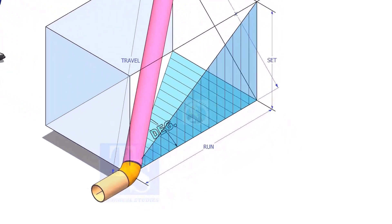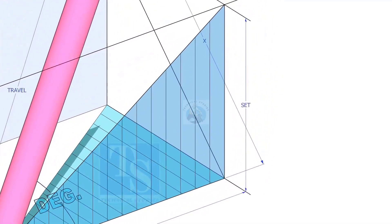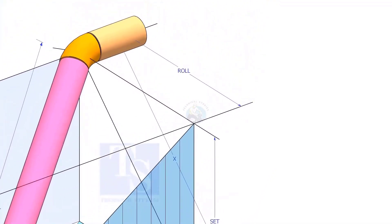In this video, I will show you how to calculate the travel length and the included angle of a double rolled offset pipe.